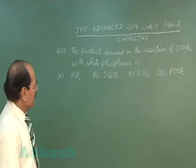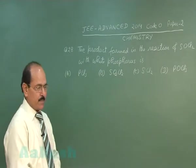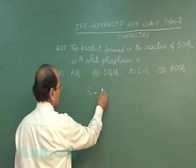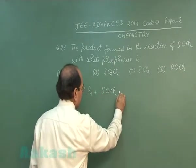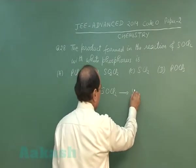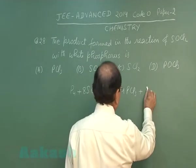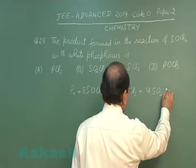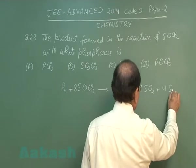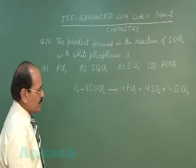Question number 28 of the paper says the product formed in the reaction of thionyl chloride with white phosphorus is? When white phosphorus reacts with thionyl chloride, the products formed are PCl₃, sulphur dioxide, and S₂Cl₂.